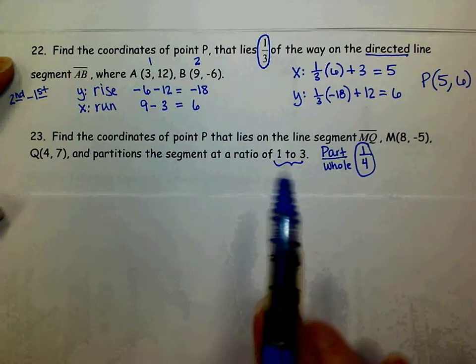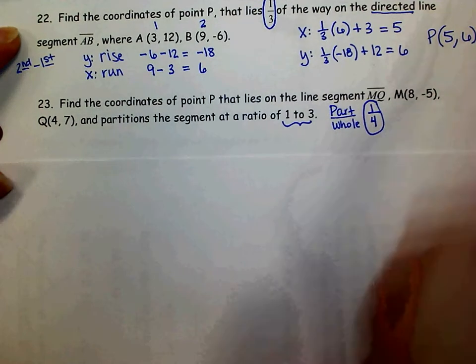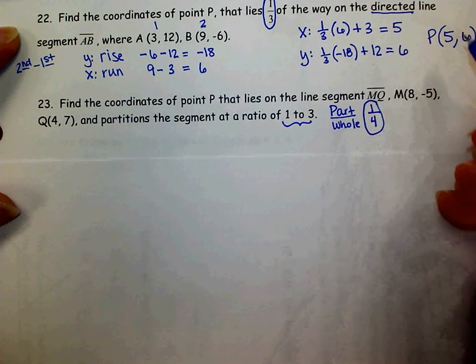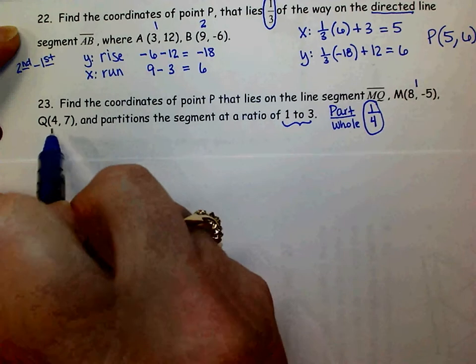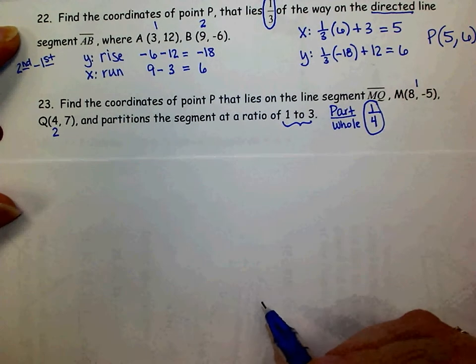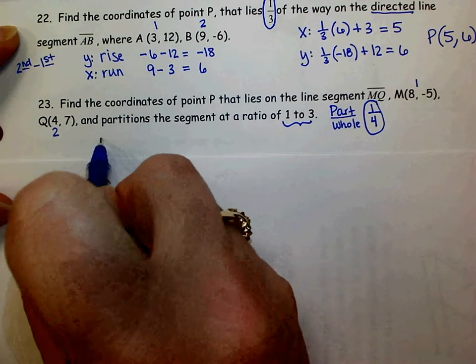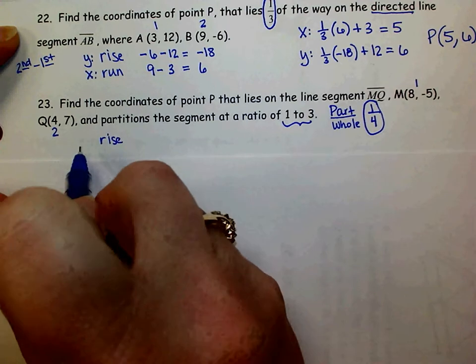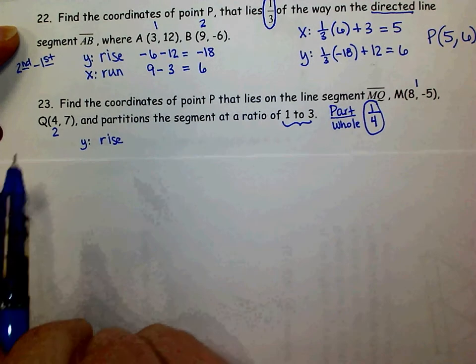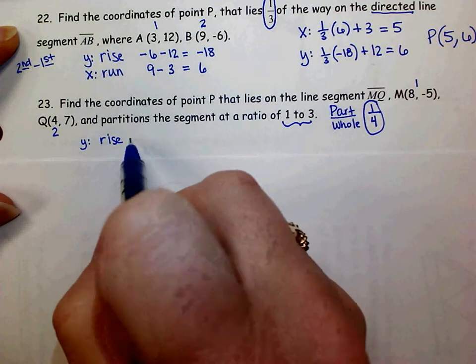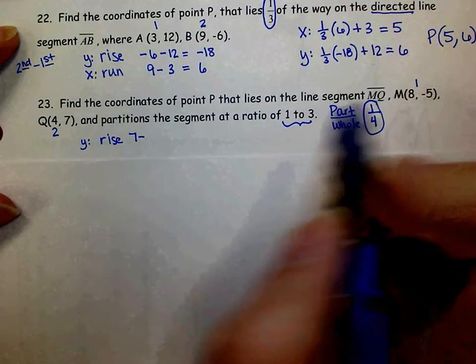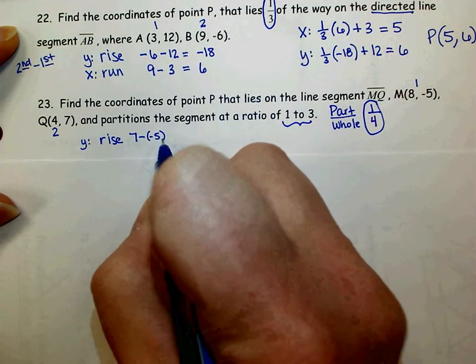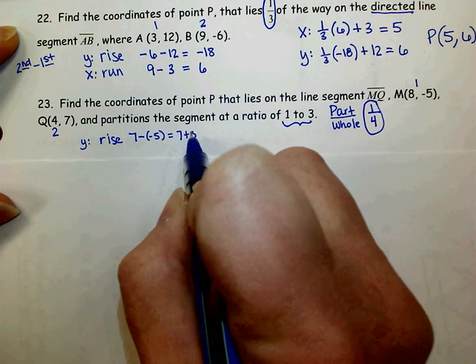On number 23, our directed line segment is MQ. So point M is the first point. Point Q is the second point. So when I find my rise, it's going to be the y-coordinates, the second y minus the first y. So I'd have 7 minus a negative 5, which is the same thing as 7 plus 5, which is 12.